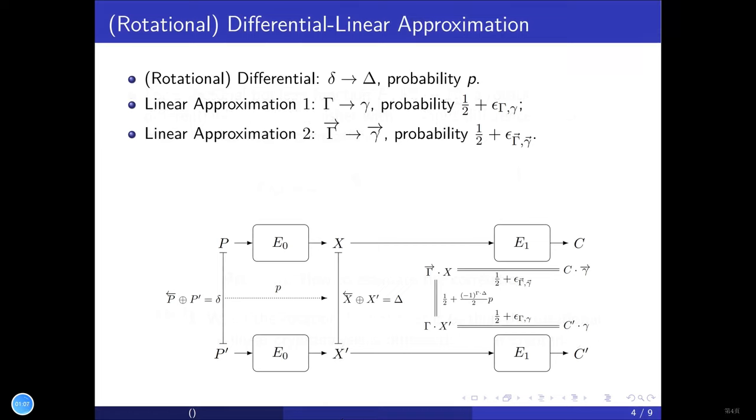Often, we divide the cipher into two parts, and the correlation of rotational differential-linear distinguishers is estimated as 4 times p times epsilon times epsilon prime. But the boomerang method may not be accurate.